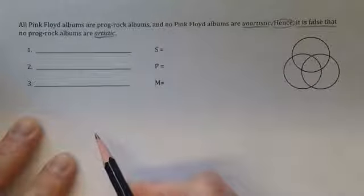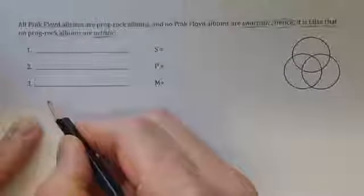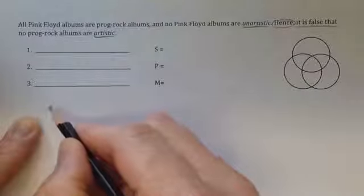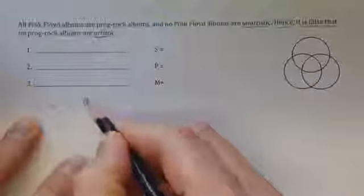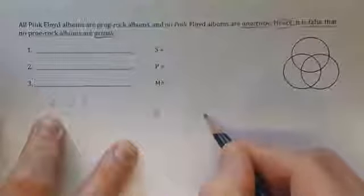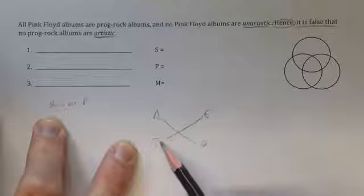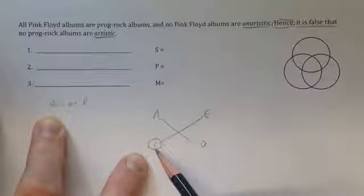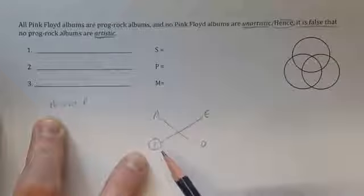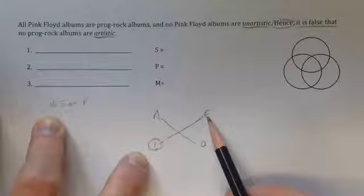The conclusion in this case is it is false that no prog rock albums are artistic. So, the temptation might be to write something like no S R P, but we're told that that's false. So, we can refer to our square of opposition. And if we're told that the E form of a proposition is false, we know that the I form of the proposition is true and that those are logically equivalent statements to say that some S R P is logically equivalent to saying it is false that no S R P.